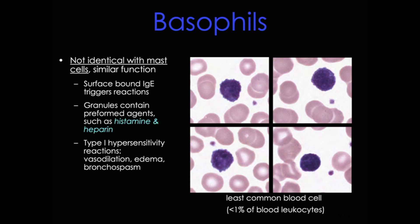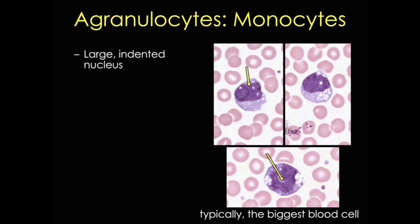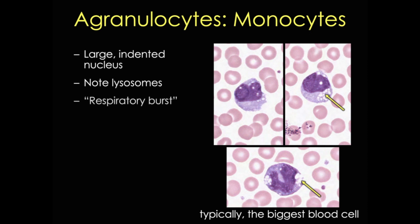Now let's take a quick look at the agranulocytes. First up is the monocyte. These large cells have a distinct large indented nucleus — it can even be C-shaped. Importantly, it's not lobed. The chromatin is lightly condensed so it also stains lightly. The cytoplasm is basophilic and contains lysosomes. Like neutrophils, monocytes can perform that oxidative or respiratory burst.